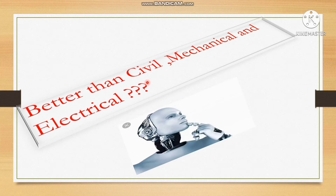To summarize: if you are looking for placement, future growth, and good package factors, you can choose EIE branch. If you are looking for security and government jobs, choose civil, mechanical, or electrical. Also, if you have an interest in robotics, you can choose EIE, because EIE branch is closely related to robotics.